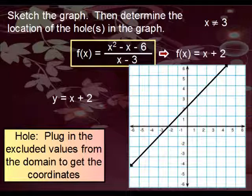Or what you could do is you could take three and plug it in. The reason why we do that is simple. Three is excluded from this one, but it's not excluded from the simplified version. Therefore, since they're essentially the same graph but with one little difference, if you take this value and plug it in here, we'll know what the point should have been.